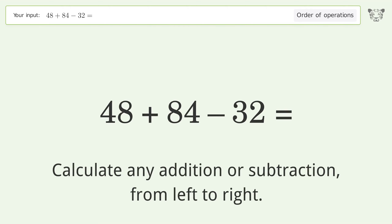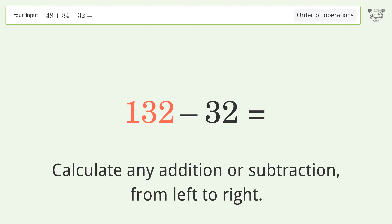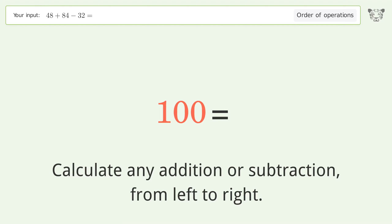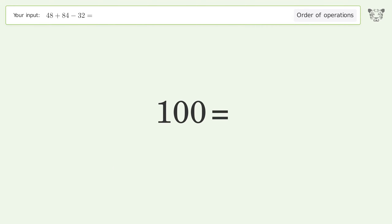Calculate any addition or subtraction from left to right. 48 plus 84 equals 132. Then 132 minus 32 equals 100. So the final result is 100.